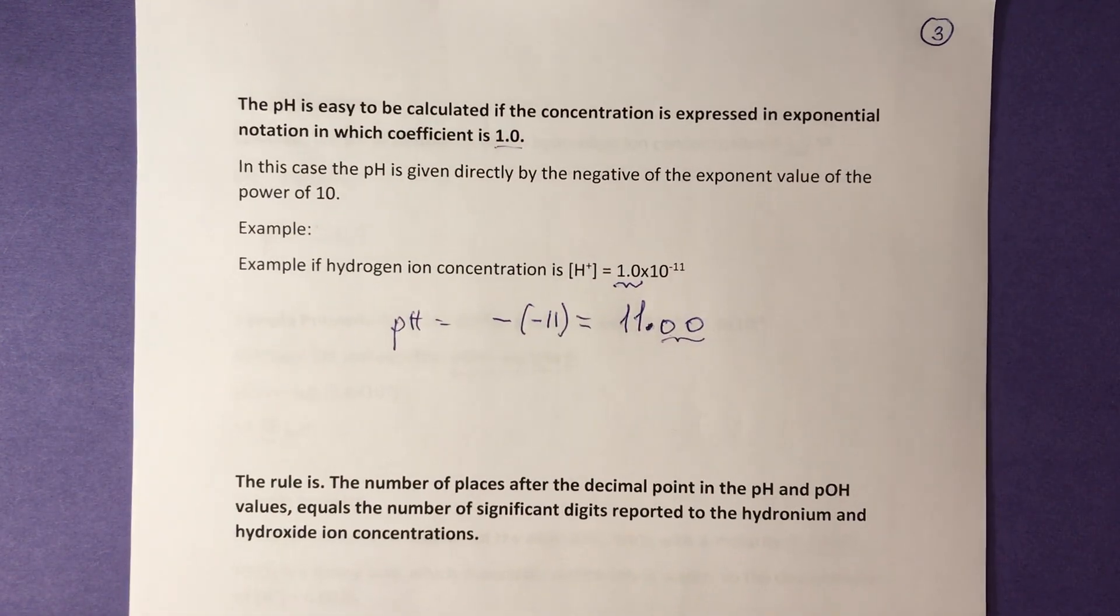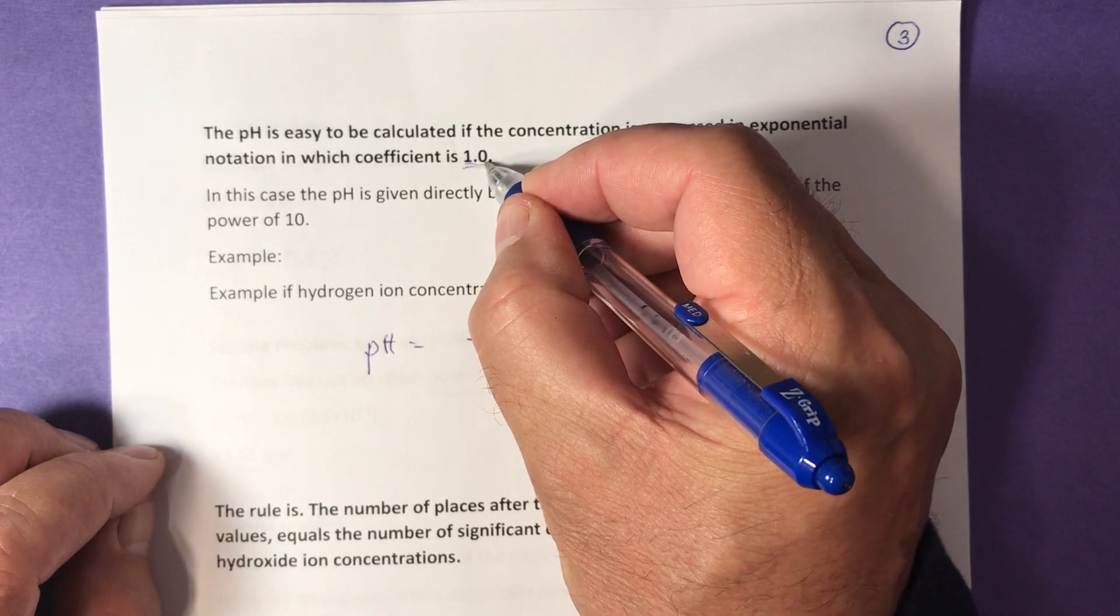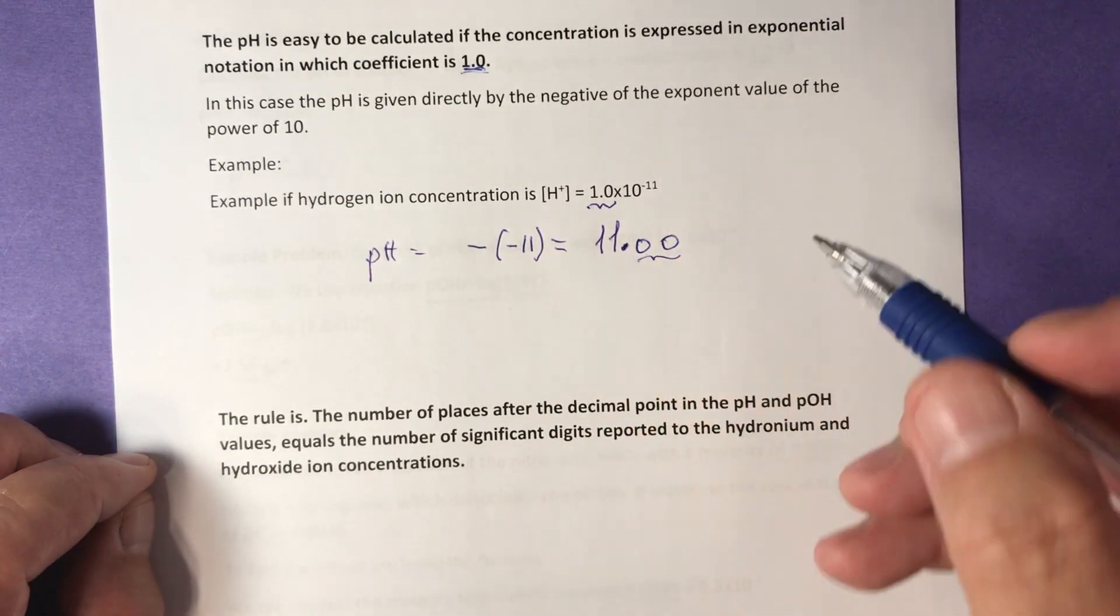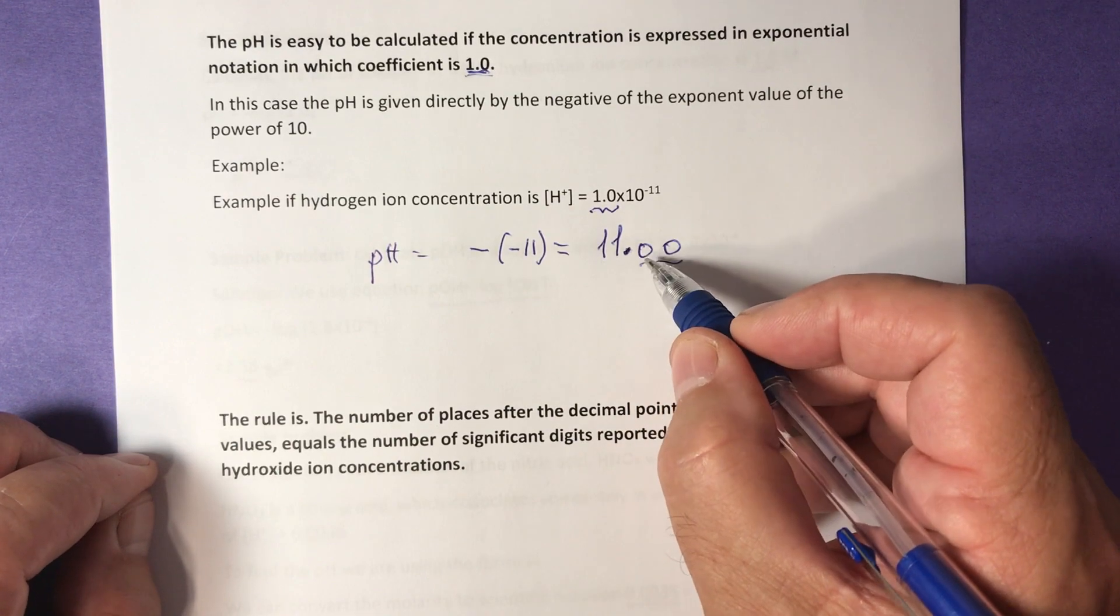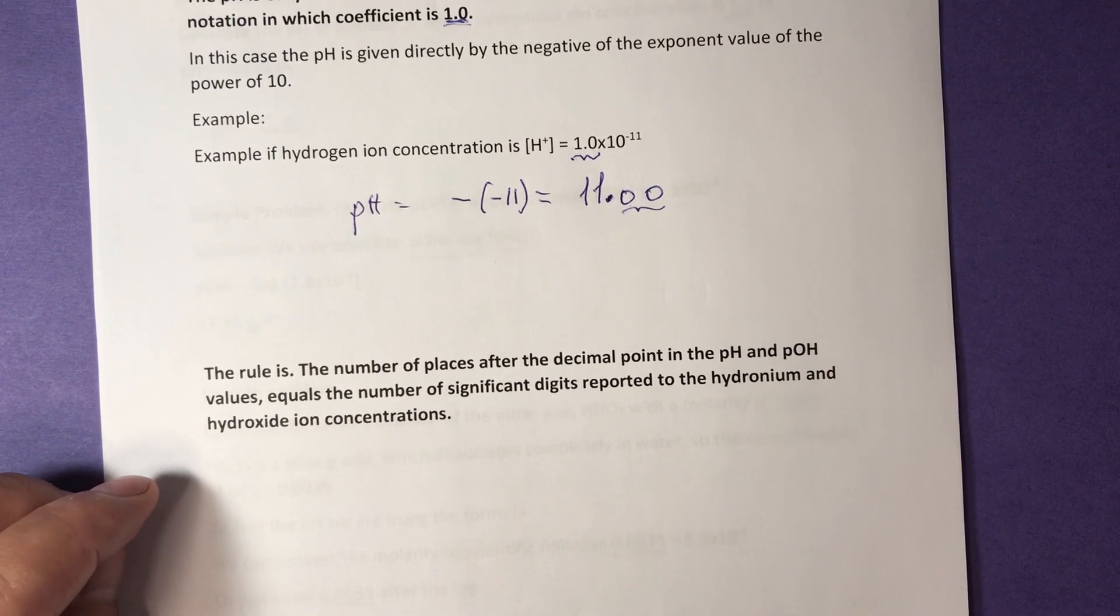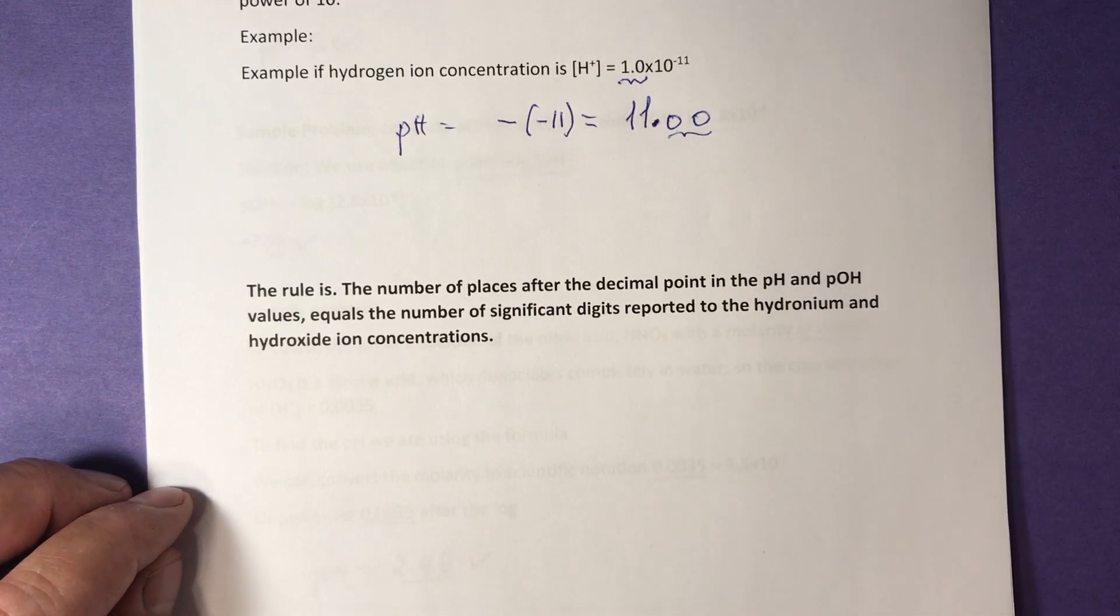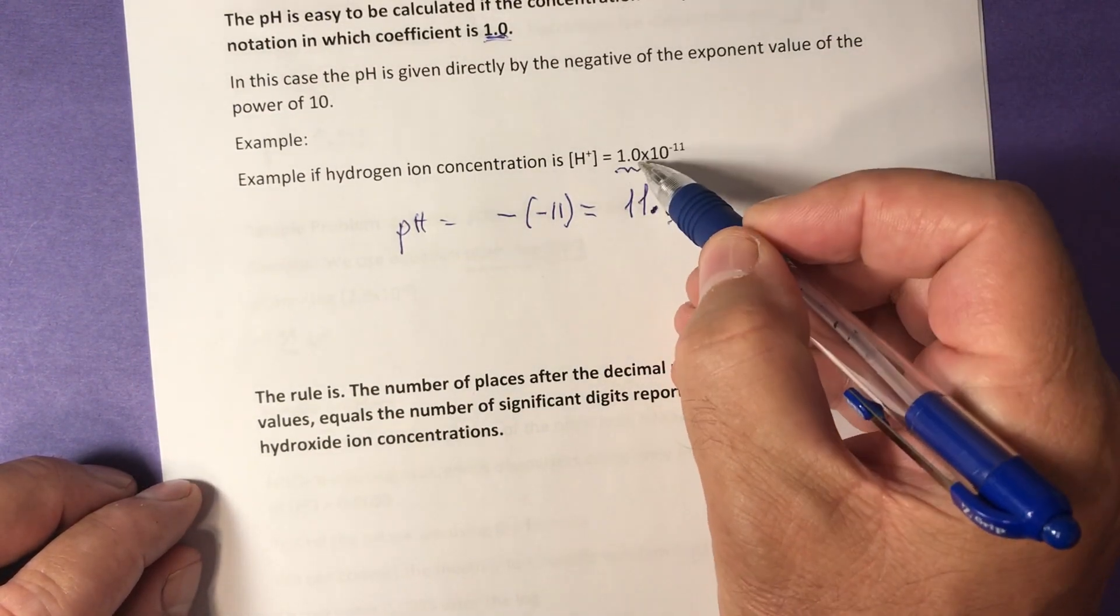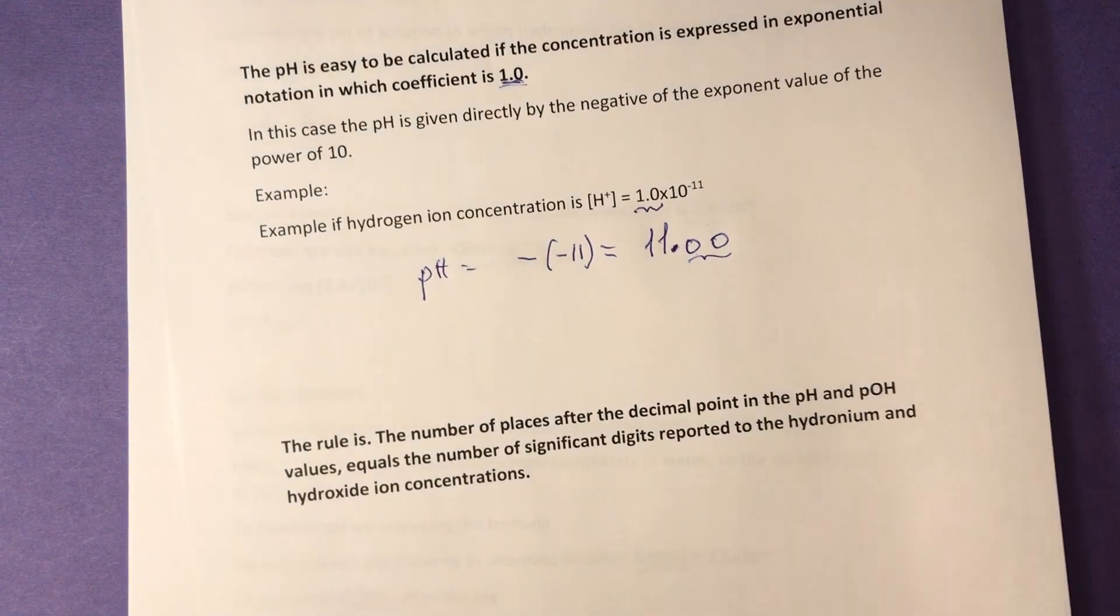The pH is easy to calculate if the concentration is expressed in exponential notation in which the coefficient is 1.0. For example, if concentration of hydrogen ions is 1.0 times 10 to negative 11, then pH is just negative of the exponent. Negative of negative 11 is 11.00. So pH is 11.00. Why 11.00, not just 11? At this point, we need to discuss significant digits for pH and pOH. The rule is the number of places after the decimal point in pH and pOH values equals the number of significant digits reported in the hydronium and hydroxide ion concentration. So we have two significant digits in the original number here, and we need two significant digits after the decimal point here. These don't count in the pH and pOH calculations.